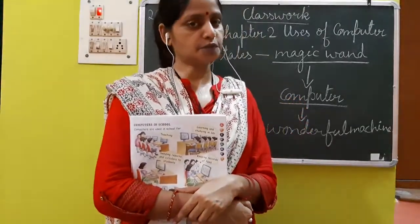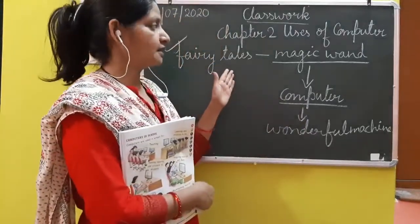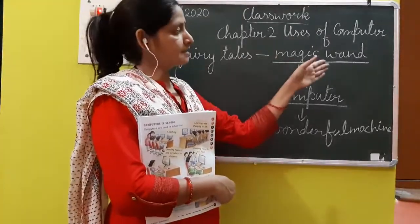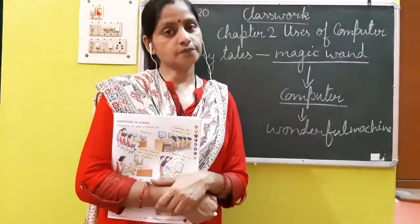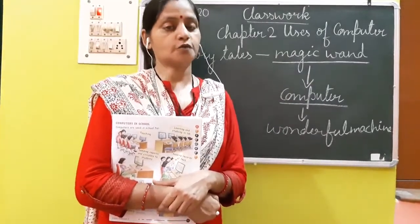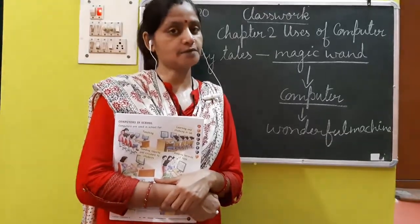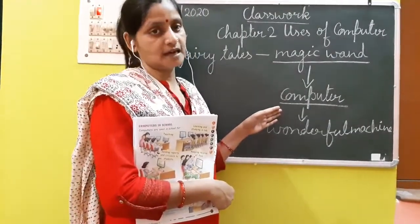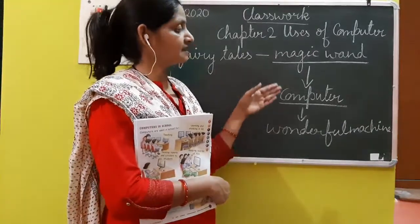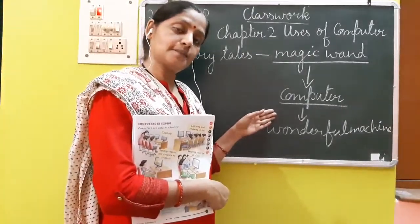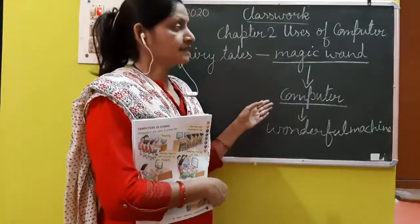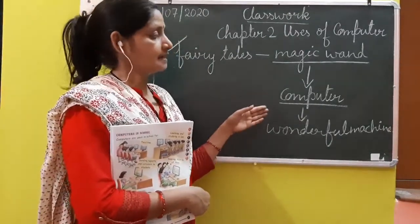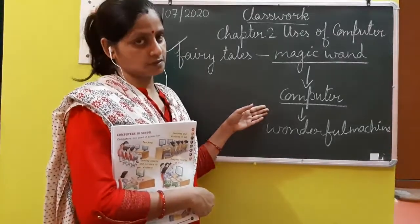Which all are the places where we have computers? In fairy tales, the fairy has a magic wand — something she uses to do whatever she wants. Now this magic wand is compared with the computer. In today's world, we have a computer instead of the magic wand, which we use like a magic wand to do any work. This computer also does all the work, same as the magic wand.